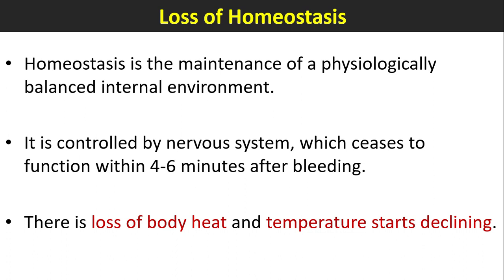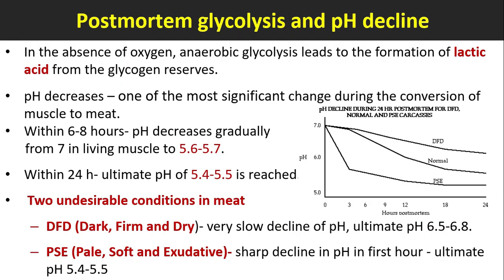Loss of homeostasis: Homeostasis is the maintenance of a physiologically balanced internal environment. It is controlled by the nervous system, which ceases to function within four to six minutes after bleeding. There is loss of body heat and temperature starts declining. Post-mortem glycolysis: In the absence of oxygen, anaerobic glycolysis leads to the formation of lactic acid from glycogen.